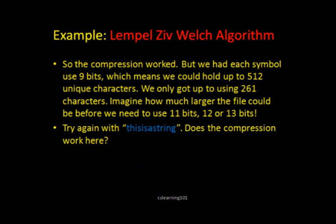You could see that the compression did work. But if we had each symbol use 9 bits — which we were using — so we could hold up to 512 unique characters in our new dictionary, we only got to about 261. That's almost half. Imagine how much larger the file could be before we needed to use 11, 12, or 13 bits. If you're using that many bits, you could compress a really large file — a typical Word document or something like that — and you should have enough room in your dictionary to do that. However, the compression algorithm does not work with all strings very well. If you tried this with a string like "this is a strain," it wouldn't work as well because there aren't as many patterns. IS appears twice, but other than that there aren't really any patterns to use.